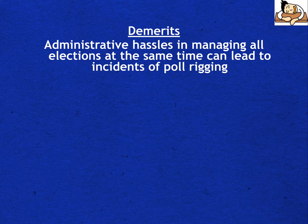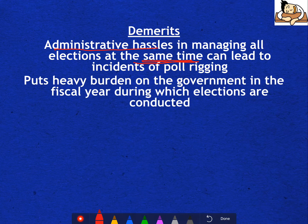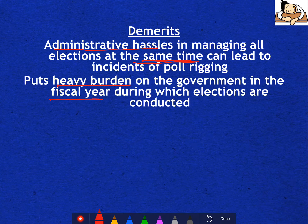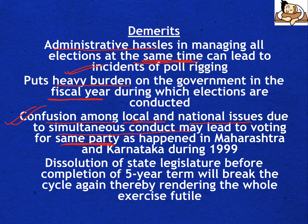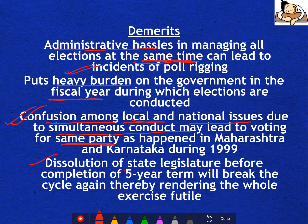What are the demerits? Managing elections at the same time will lead to administrative hassles, and it will put a heavy burden on the government in the fiscal year when elections are held. It will also lead to confusion among local and national issues due to simultaneous conduct — voters may vote for the same party at both levels. Also, if a state legislature is dissolved before completion of a five-year term, it will break the cycle again, rendering the whole exercise futile, as there is a high possibility of dissolution in any state.